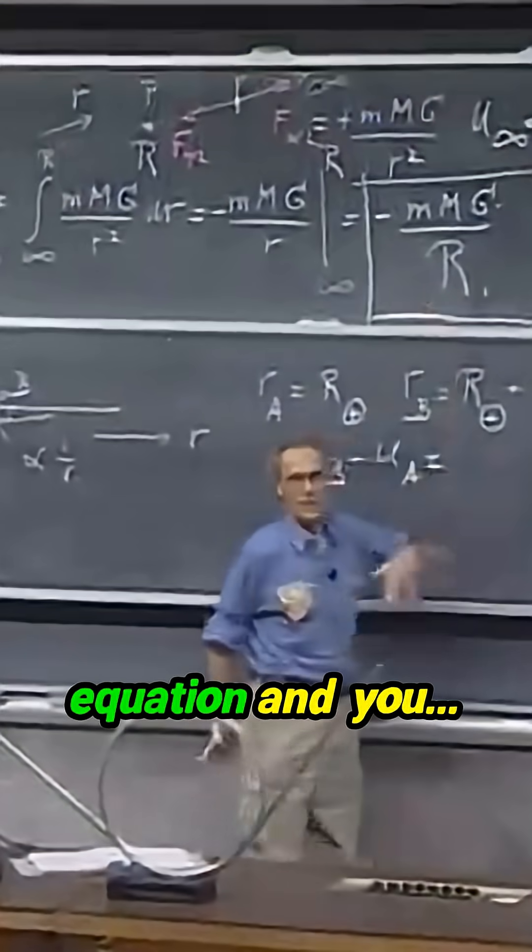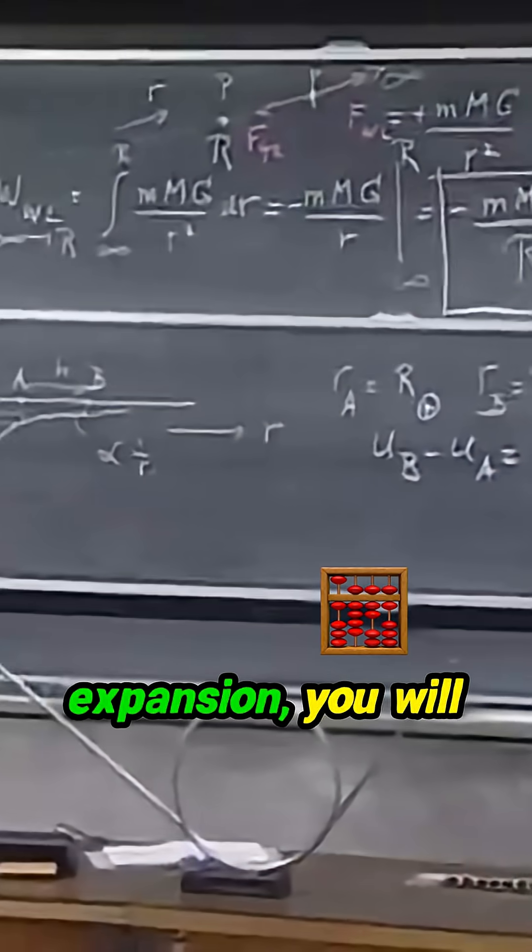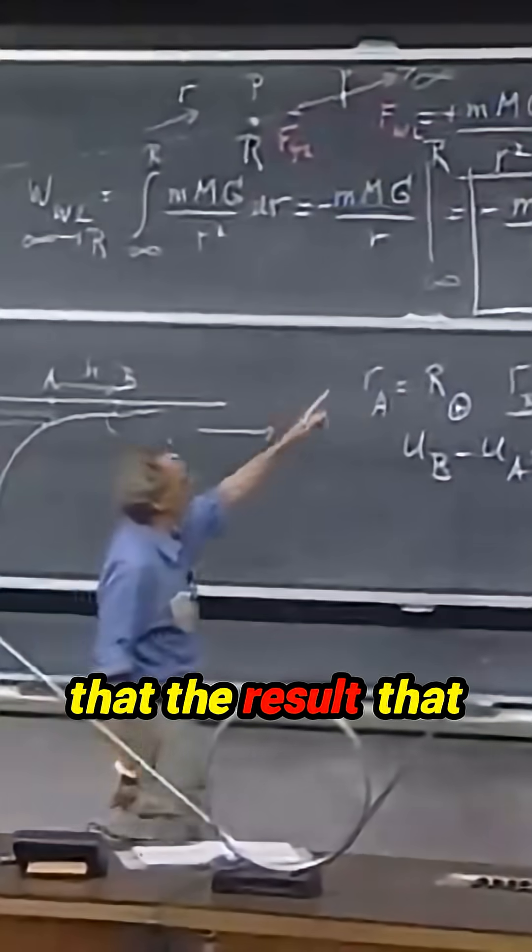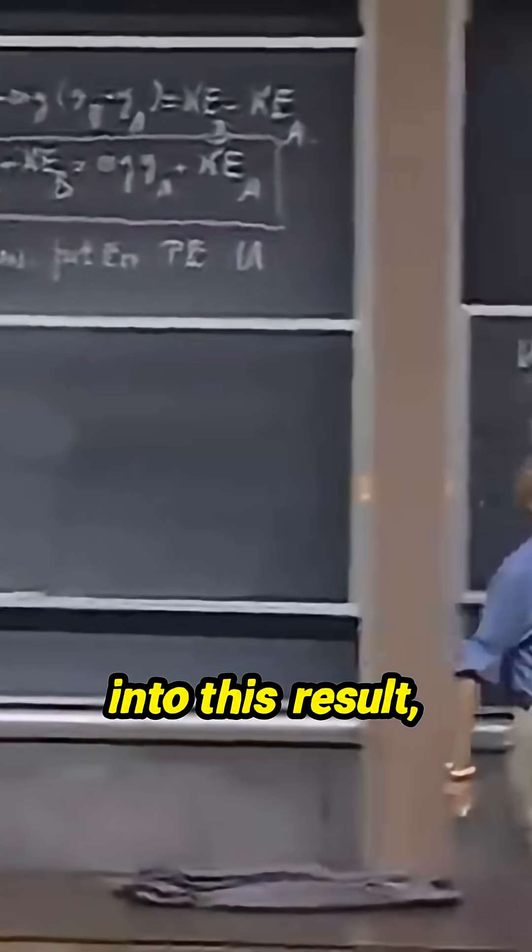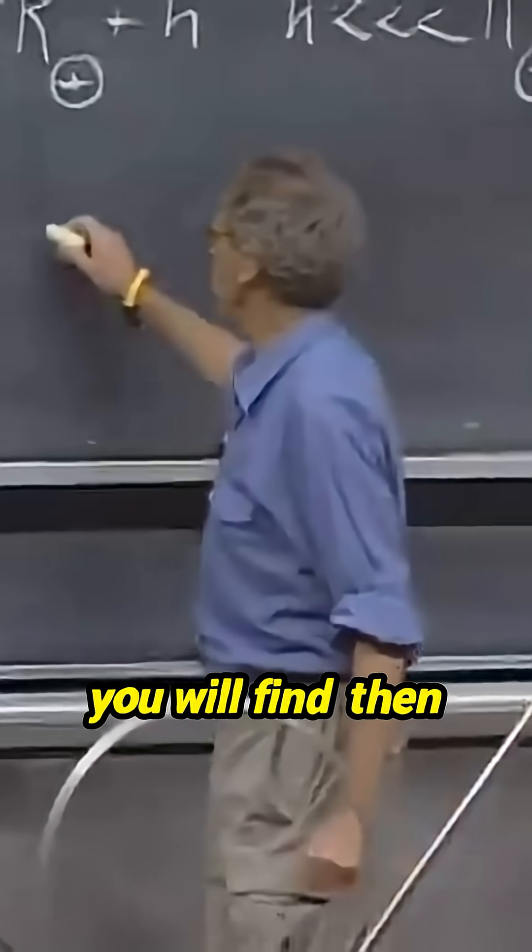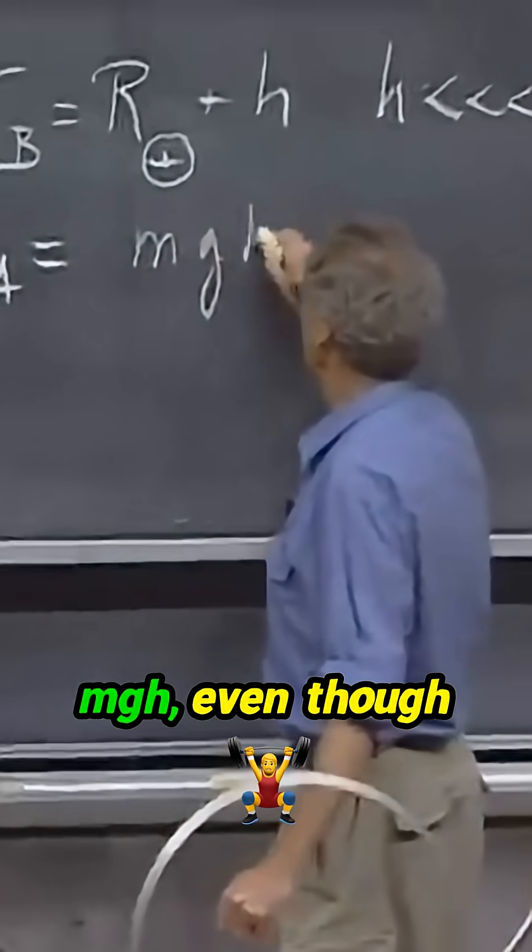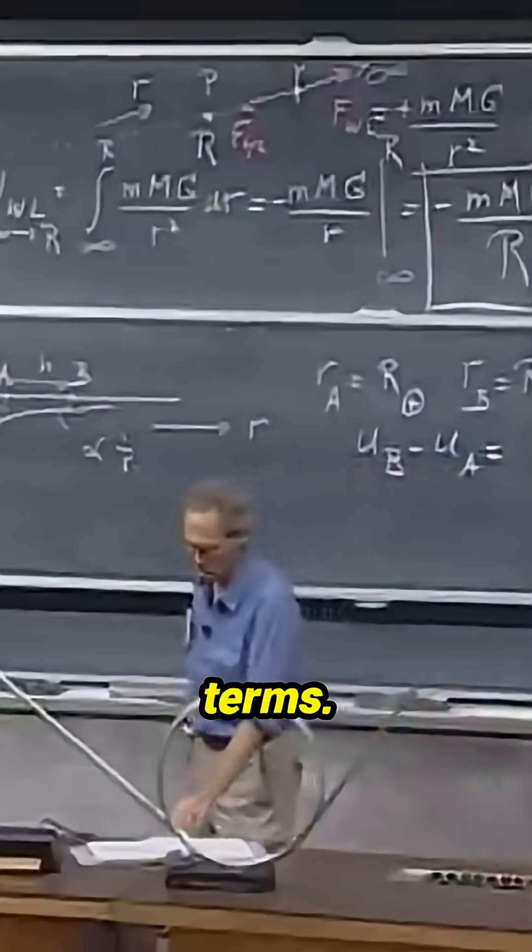And when I use that equation, and you use the Taylor expansion, the first-order Taylor expansion, you will immediately see that the result that you find collapses into this result, because the g at the two points is so close that you'll find it is approximately mgh, even though it is the difference between these two rather clumsy terms.